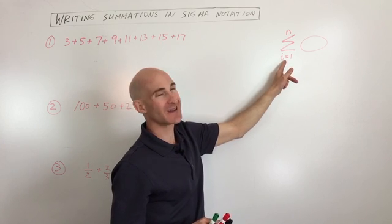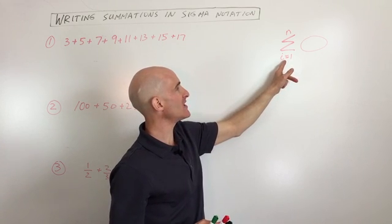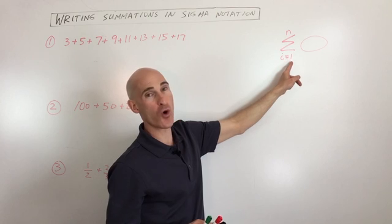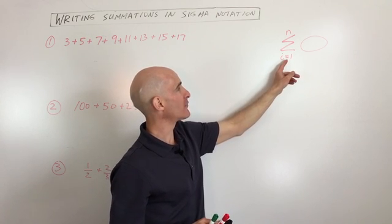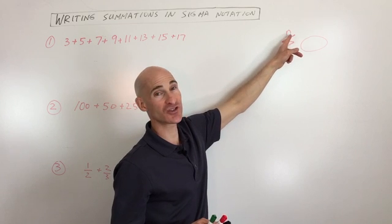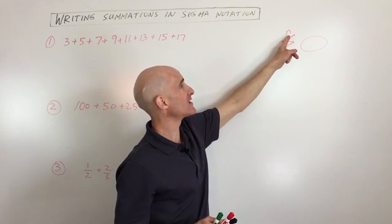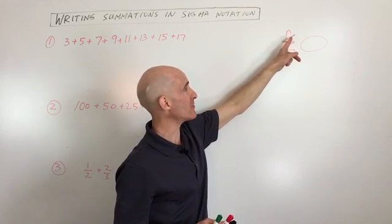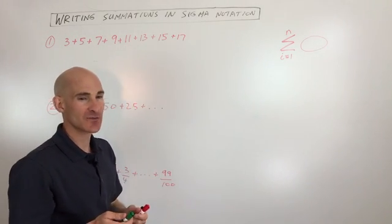And what you do is you want to pick a variable, this is your index. Here I've said i equals one, meaning I'm starting at the first term, and I'm going to work my way up sequentially in order until I get to the nth term, that's the last term. So I'll show you what I mean. Let's take a look at some examples.